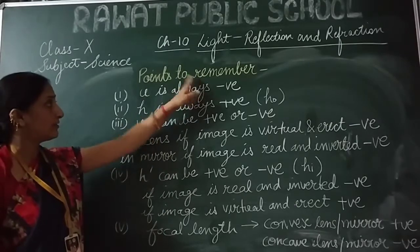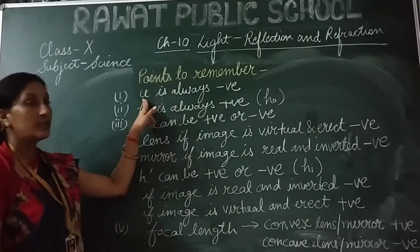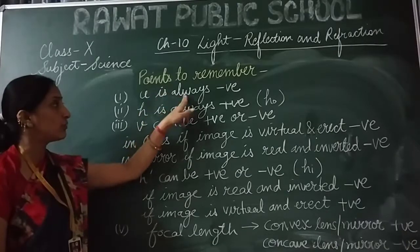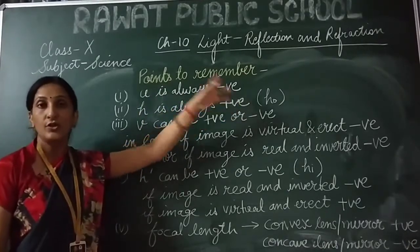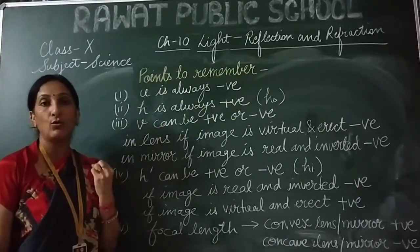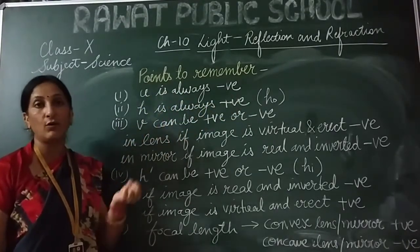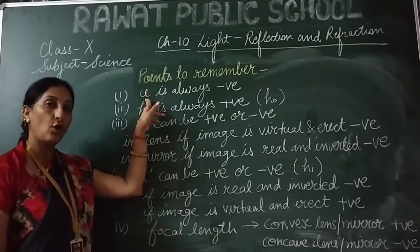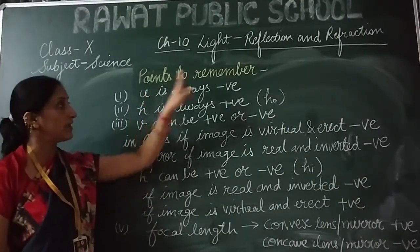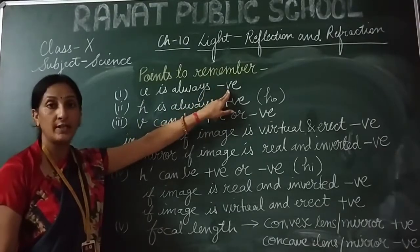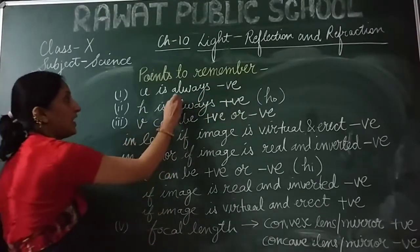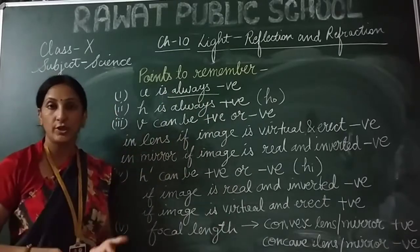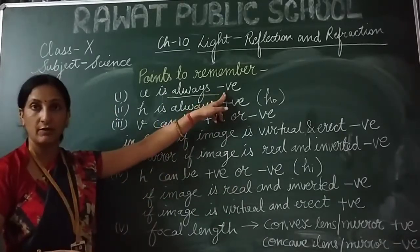The first point is: the distance of the object, that is U, is always negative — whether it's a lens or a mirror. Whenever we put the value of U, it will always be negative. No need to think about this; it is always negative.